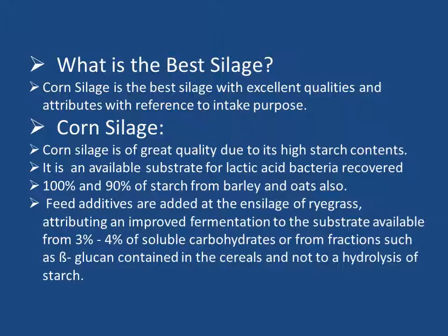Corn silage provides an available substrate for lactic acid bacteria, recovering 100% and 90% of starch from barley and oats also. Feed additives are added to silage of rye grass, improving fermentation. About 3% to 4% of soluble carbohydrates come from fractions such as beta-glucan contained in the cereals, and not from hydrolysis of starch.